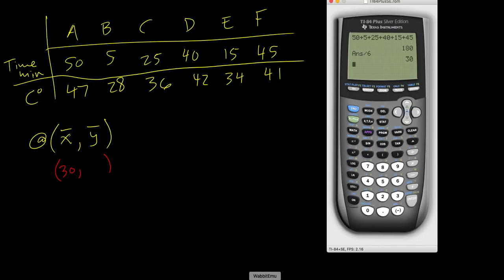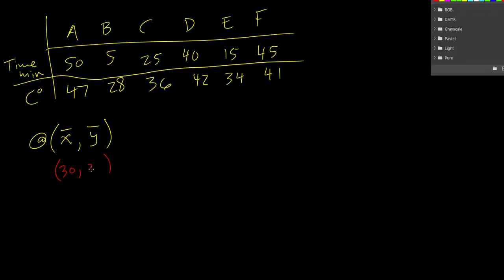And then I'll do the same thing with my y value. 47, 28, 36, 42, 34, and 41. Once again, divide that by 6. And the average temperature is 38 degrees Celsius.